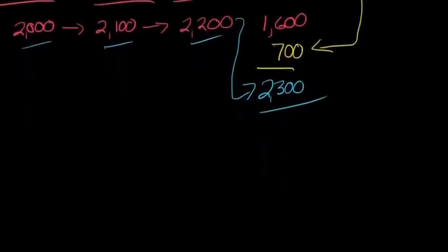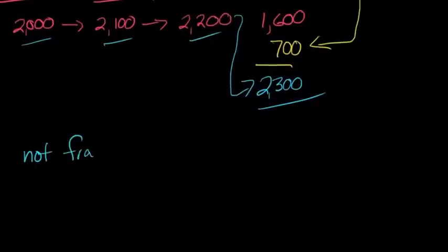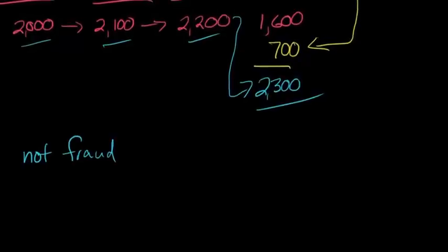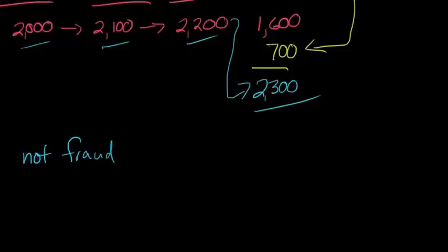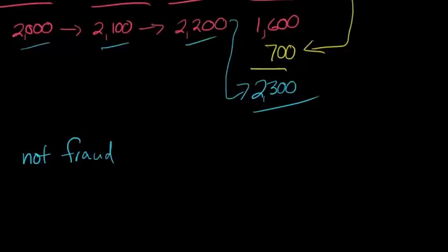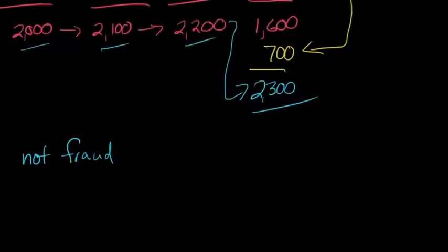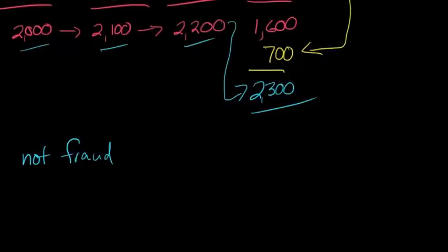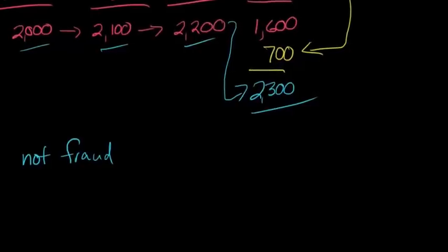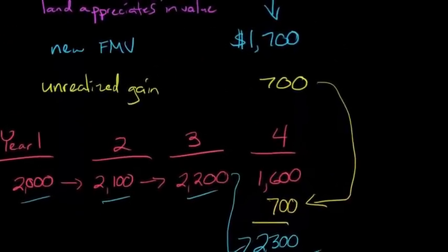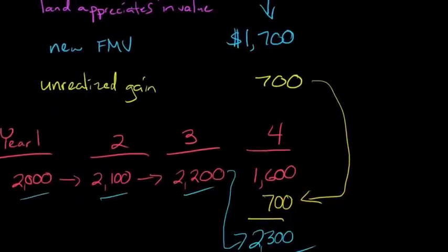Again, it's important to note this is not fraud. However, when we have aggressive earnings management, when there's a lot of pressure to meet earnings targets and firms are doing all kinds of transactions with the express purpose of manipulating the earnings number, sometimes people go too far and start doing things that are fraud. They might have fictitious sales, channel stuffing, or other things to pump up earnings. But remember, when we talk about earnings management in general, we're not referring to fraud. That's a different thing that aggressive earnings management can lead to. With earnings management, we're really talking about a firm timing its transactions to artificially pump up its earnings number.